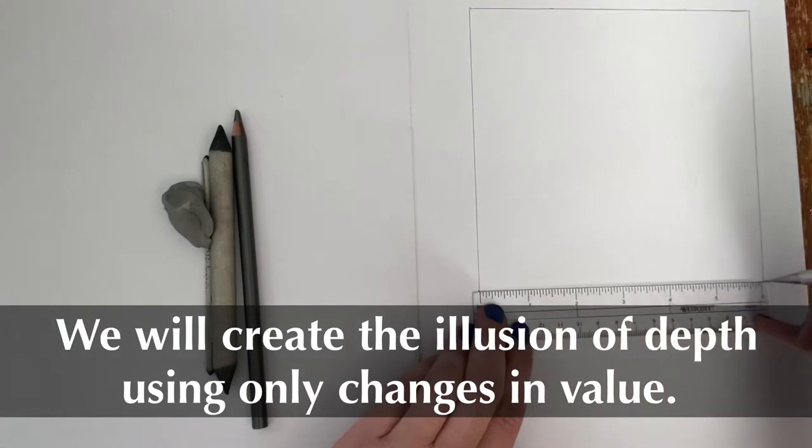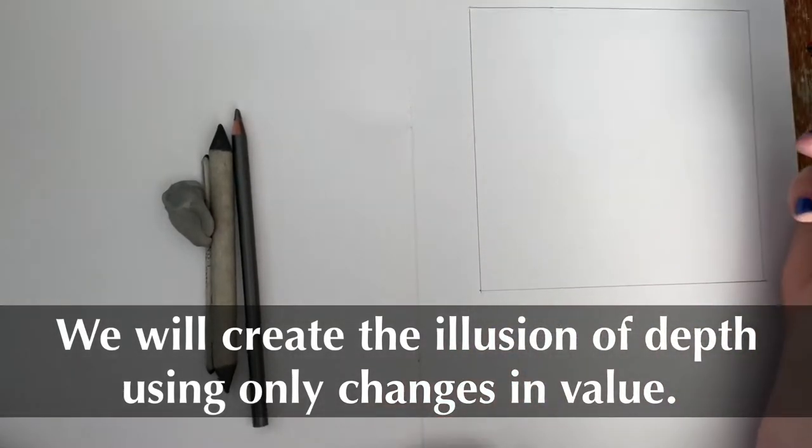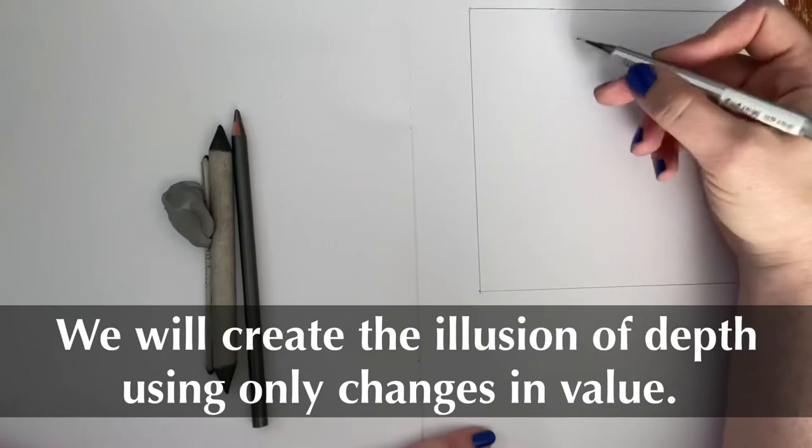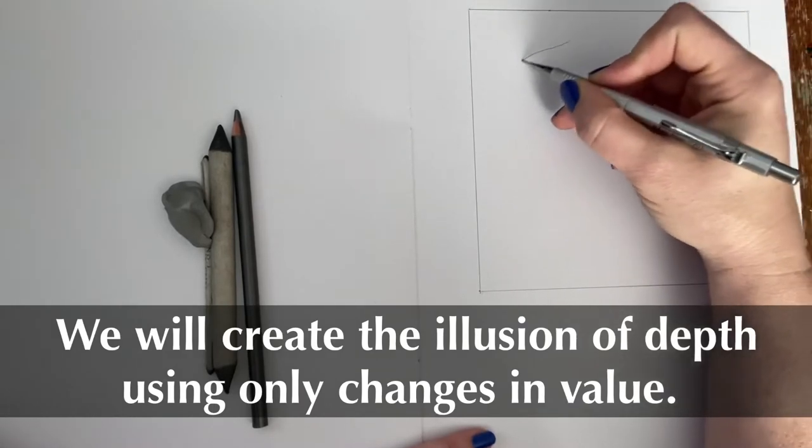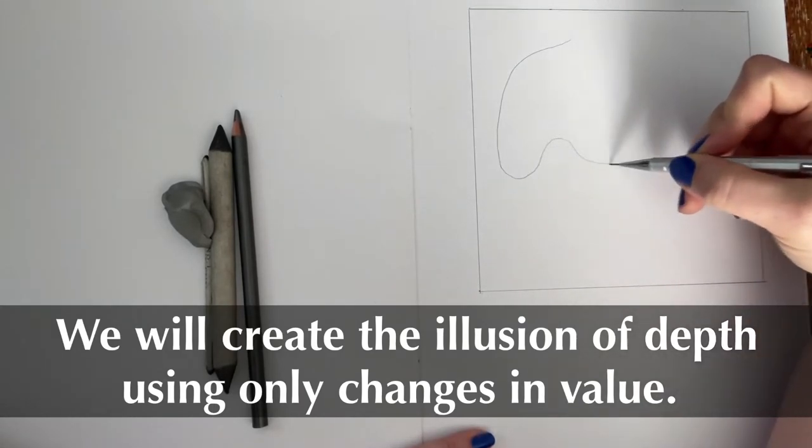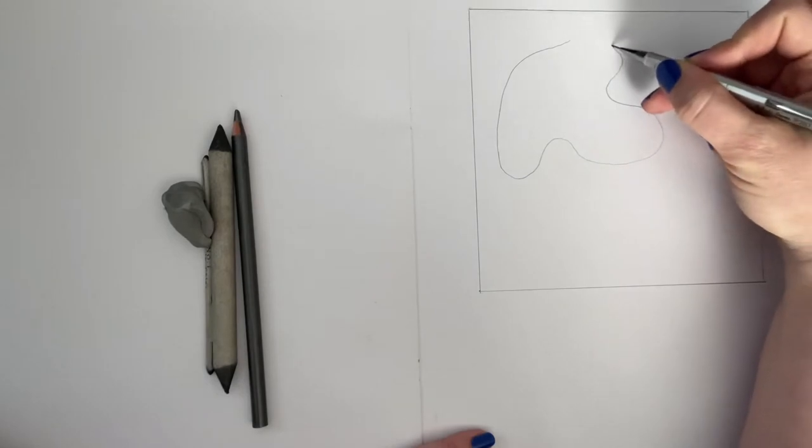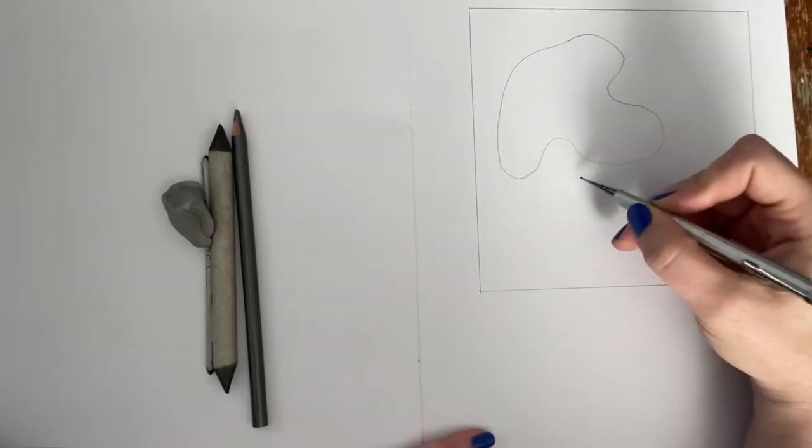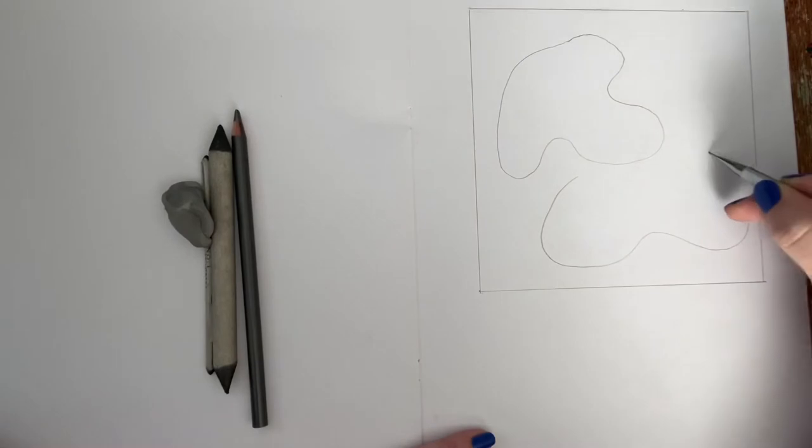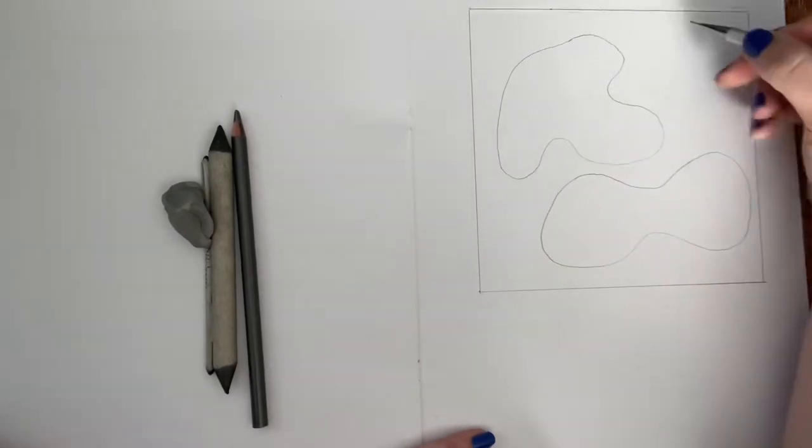We're going to be creating the illusion of depth using only changes in value and a little exercise that I like to call layers and holes. Some people call it stacked Swiss cheese, but I'm going to start by making a couple of large organic shapes.